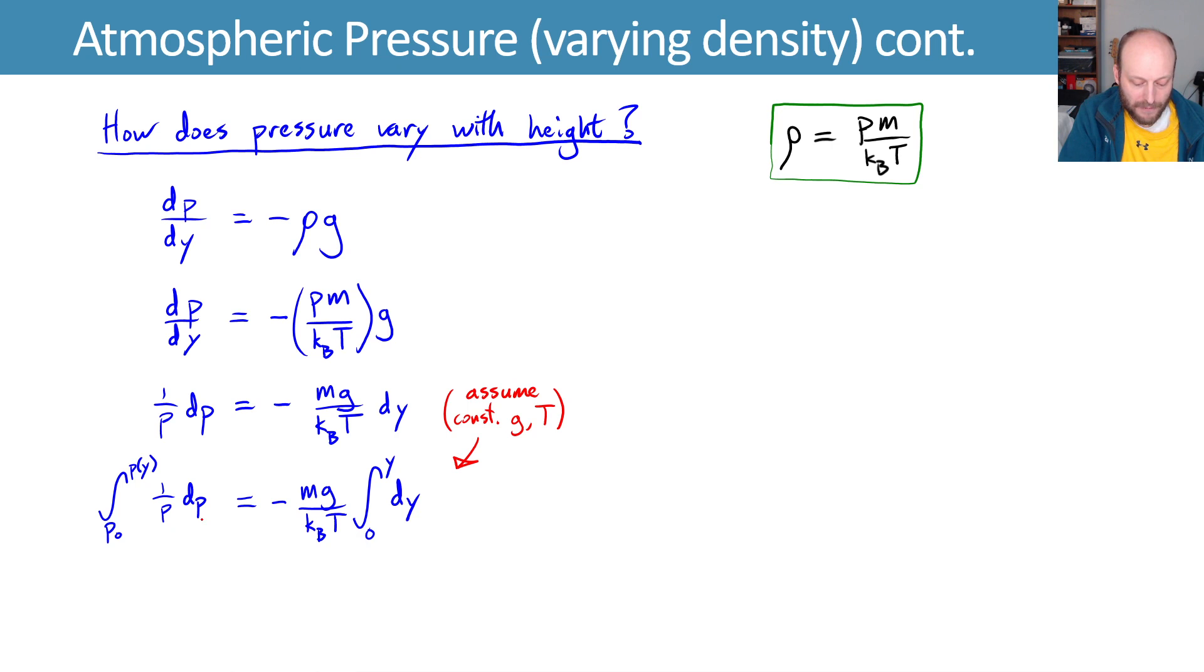Evaluating this integral now, we have the integral of 1 over p dp from our initial pressure p₀ to some pressure as a function of position y. And we will integrate 1 over p dp gives you the natural log of p, which you evaluate between your limits. And on the other side, the integral of dy just gives us y that we evaluate between our limits 0 to y.